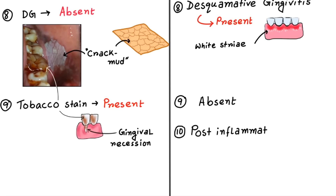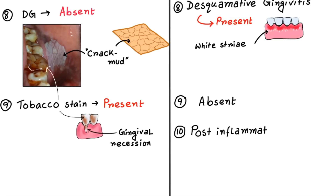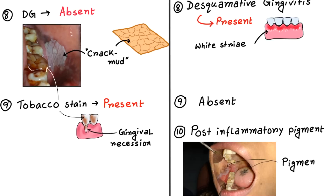The last thing you should check is post-inflammatory pigmentation or post-healing pigmentation. Here you can see the grayish pigmentation. As Lichen Planus has an inflammatory reaction, post-inflammatory pigmentation is a typical finding of Lichen Planus, but it is absent in case of Leukoplakia.